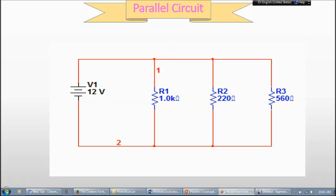So what we have is a 12 volt DC battery and it's supplying power to the circuit. In the circuit we have R1, R2, and R3, and they are all in parallel with each other. R1 being a 1 kilo ohm resistor, R2 being a 220 ohm resistor, and R3 being a 560 ohm resistor.